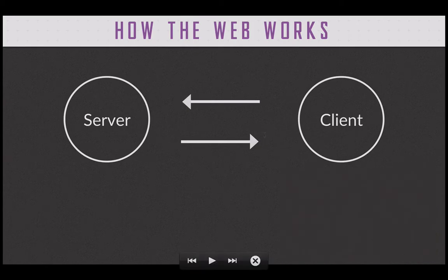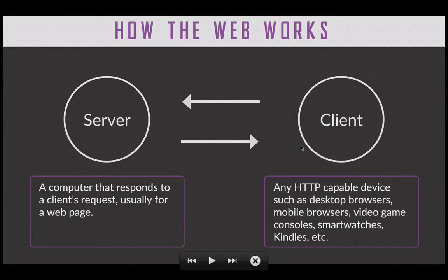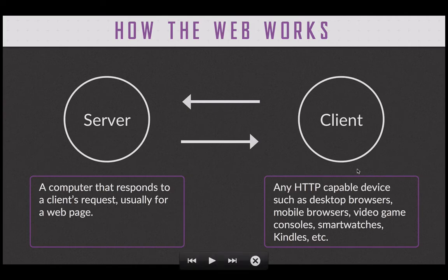If you think about using the web, you typically interact with it through a client. This client can be one of numerous types of devices — the important part is that it's an HTTP-capable device. Think of it as any device you can use to access the web: desktop browsers, your phone, video game consoles, watches, Kindles, smart devices like refrigerators — it's starting to get a little crazy.